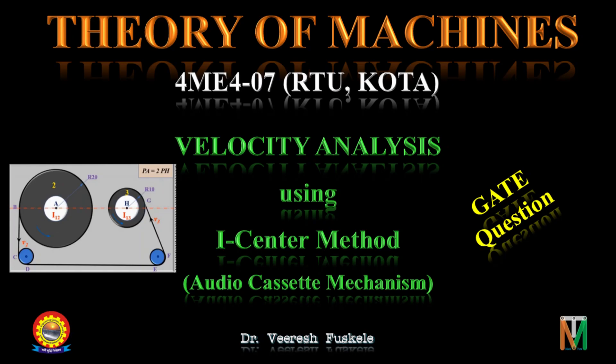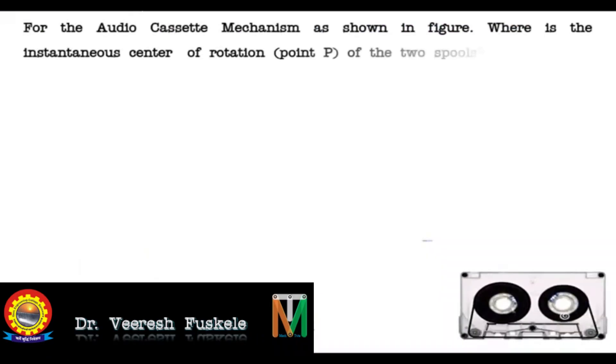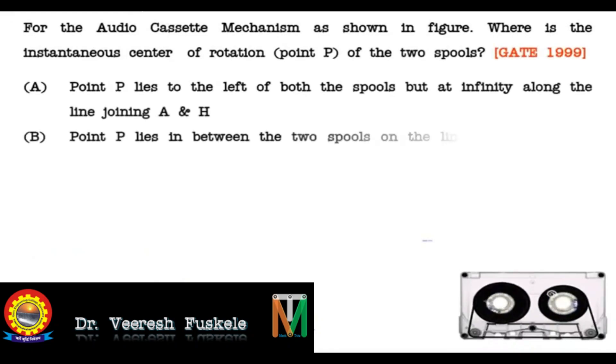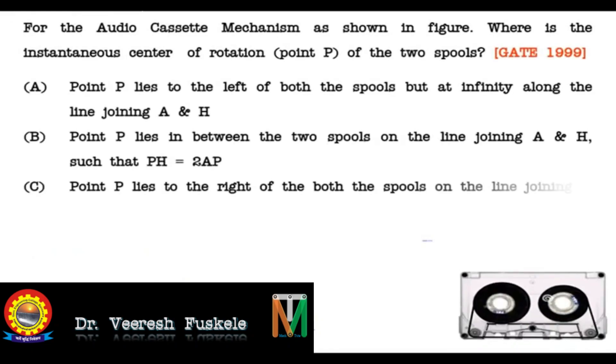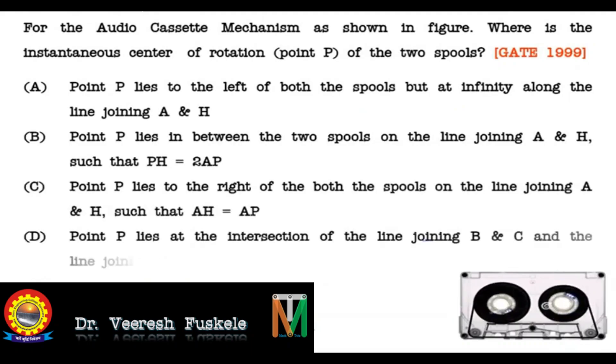Hello students, welcome to the new session of velocity analysis using instantaneous center method. Today we will be discussing a very interesting problem from the gate exam. The problem is: for the audio cassette mechanism as shown in figure, where is the instantaneous center of rotation, that is the point P, of the two spools? This is a question from gate 1999.